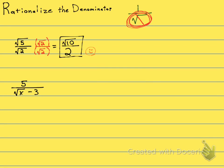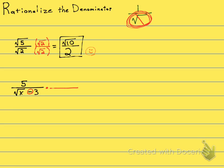Now let's look at this one. I have a radical in the denominator, but this one's different because the denominator looks like a binomial. So I can't just multiply by what the radical was. To get rid of this, I need to multiply by the conjugate. You remember what the conjugate is — the math cousin? Conjugates look the same, but the sign in the middle is different. For this problem, I need to multiply by square root of x plus 3 over square root of x plus 3.